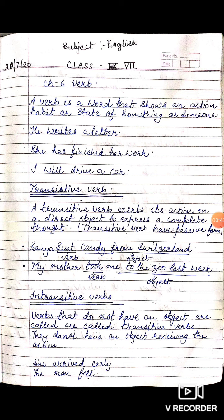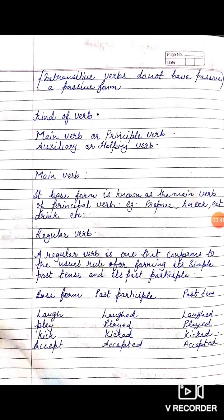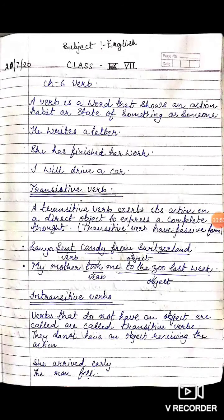Further, verb is classified into two types. First is transitive. Second one is intransitive. Now we will learn transitive verb.